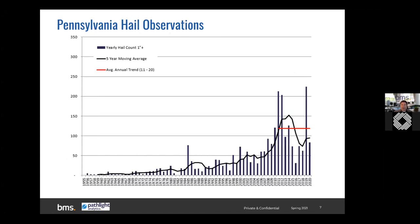I prefer not to use loss data alone to determine a trend in a weather peril like hail — I like to look at the weather peril itself. Looking at hail observations from 1955 through 2020, there does appear to be an increase, but you need to understand our observational practices over this period. In the 1950s through 80s, you actually had to look up the weather service phone number in a thick book to call in a hail report. With the advent of the internet in the mid-to-late 1990s and then smartphones starting around 2007, it became much easier to report hail. Our best observational hail records are probably from the mid-2000s onward.